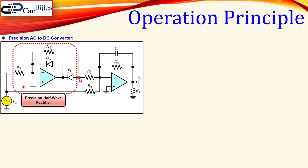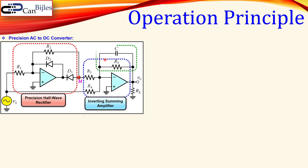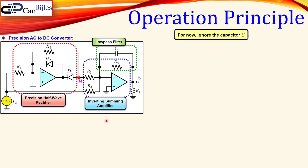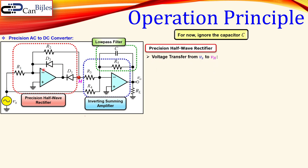This is discussed in a separate video on my channel. This part is the inverting summing amplifier, and this part together with R5 and capacitor C creates a low-pass filter to filter out the frequencies we don't want. For now we ignore the capacitor C. The precision half-wave rectifier takes voltage Vs going into this circuit and produces a voltage at node H given by a specific relationship.